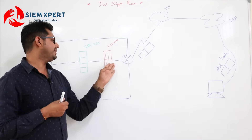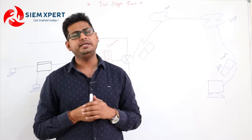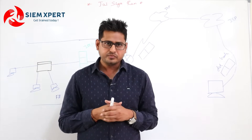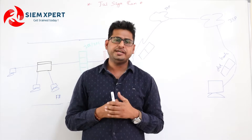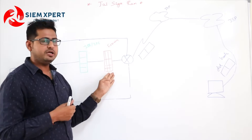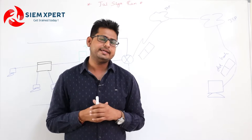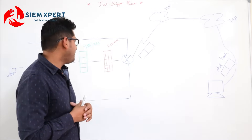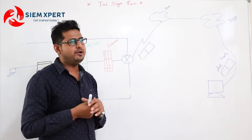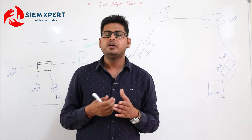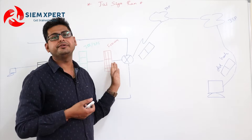Similarly, when a connection hits the firewall, the firewall records the activity in the form of logs. The firewall is a layer four device in the OSI model, so it has visibility of IP addresses as well as port numbers. Based on that, it checks source IP, destination IP, source port, and destination port to decide whether the connection should be allowed or disallowed, and records everything in the form of events.